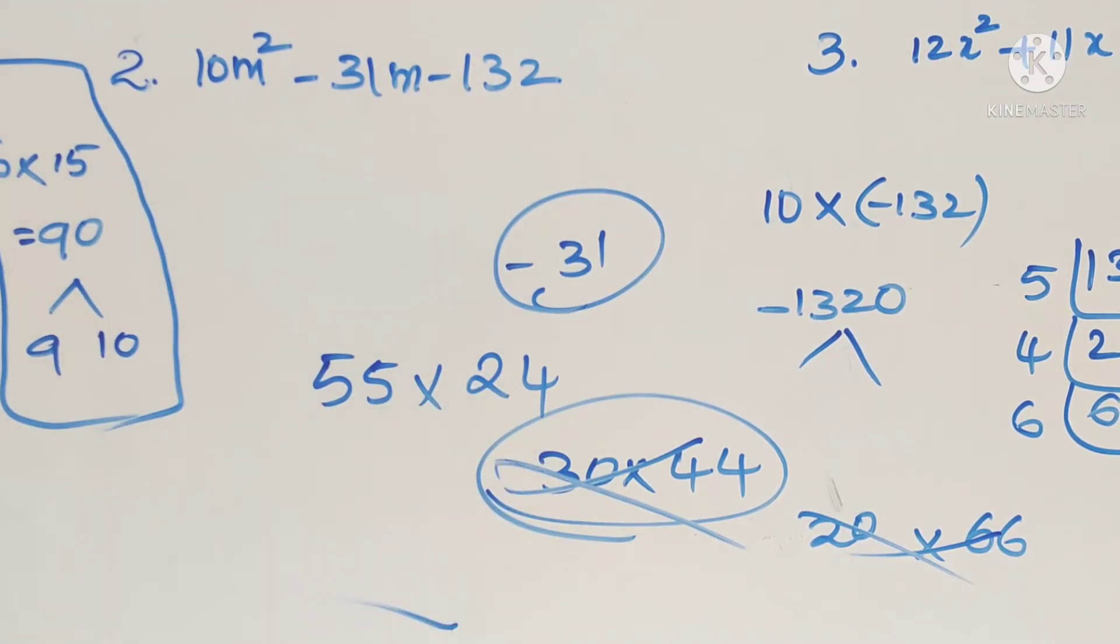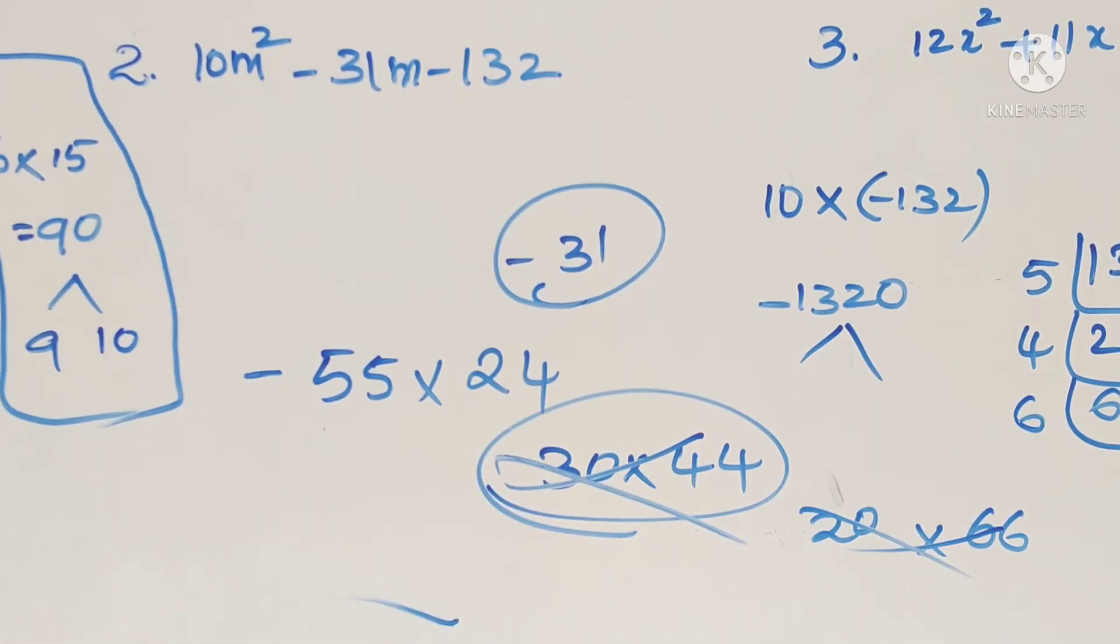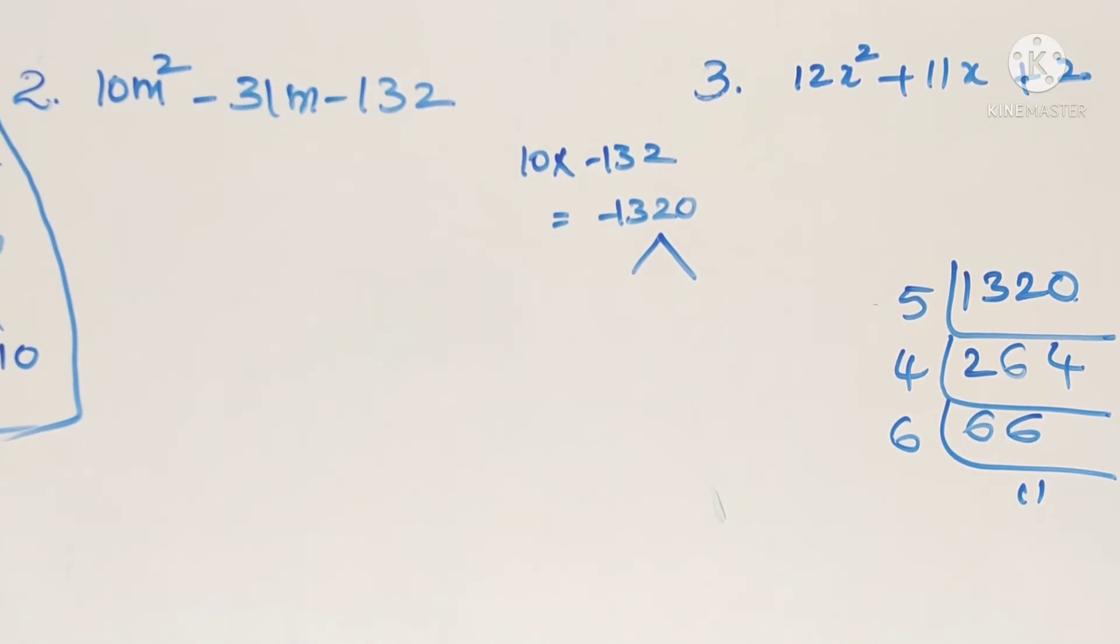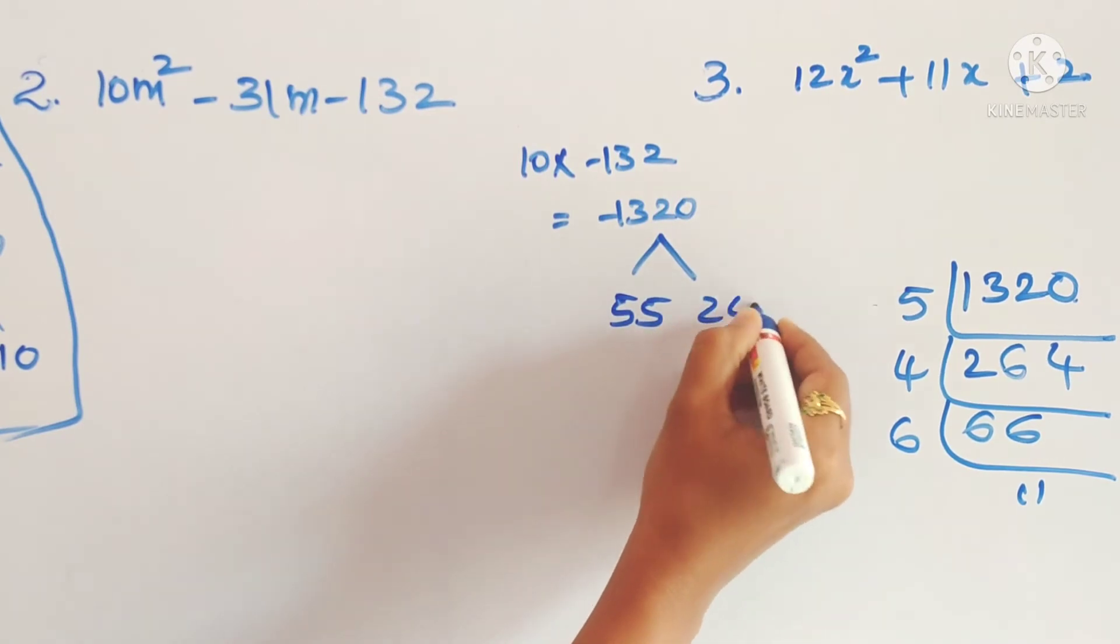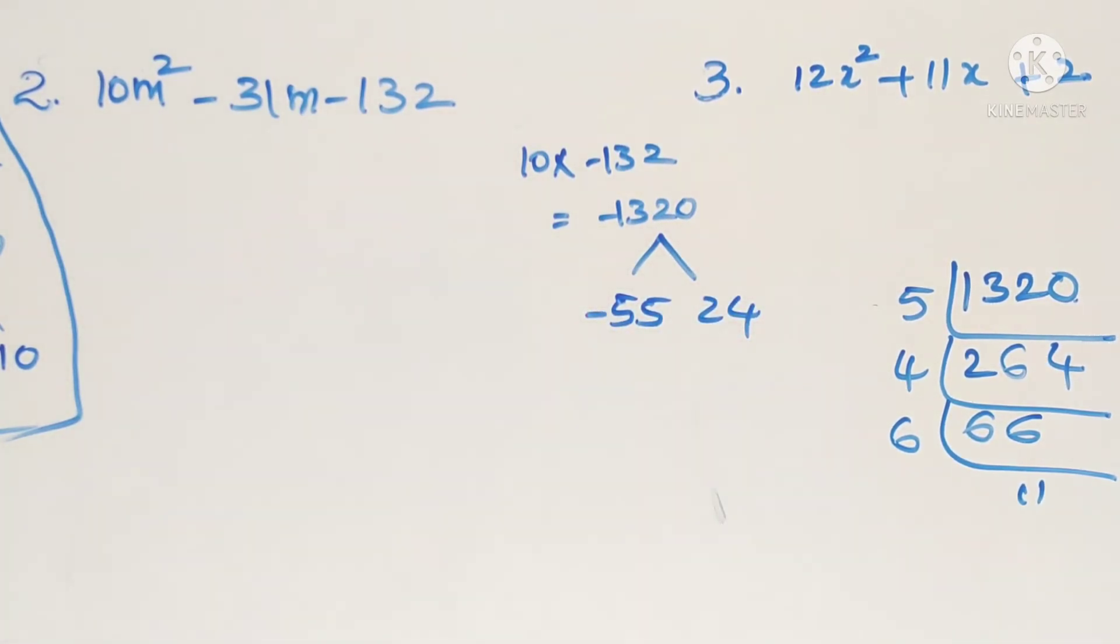11 into 5 is 55 and 6 into 4 is 24. So see here, 55 minus 24, subtraction is 31. And the big number we make minus, so it becomes minus 31. And minus 55 into 24 is minus 1320 also. So we can write as here, 1320 factors are minus 55 into 24.